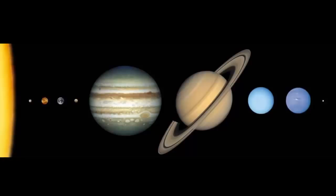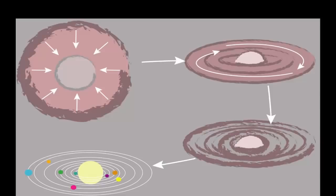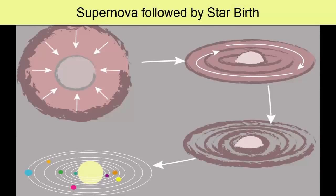Turns out that to create rocky planets the size of Mercury, Venus, Earth, Mars, and some of the rocky moons in our solar system, multiple episodes of star deaths, supernovas, and subsequent births from the remnants were necessary to cook up enough of the required heavy elements.